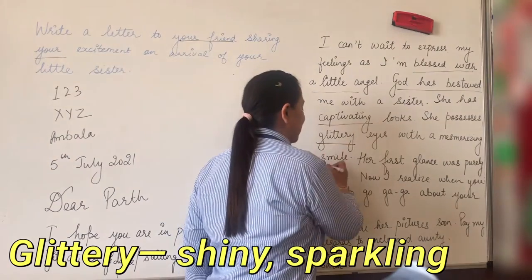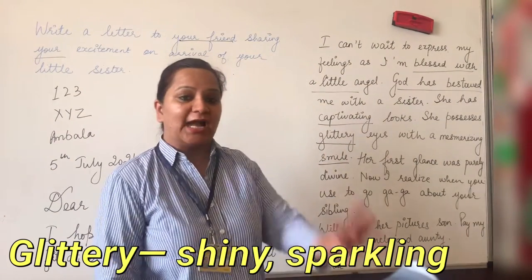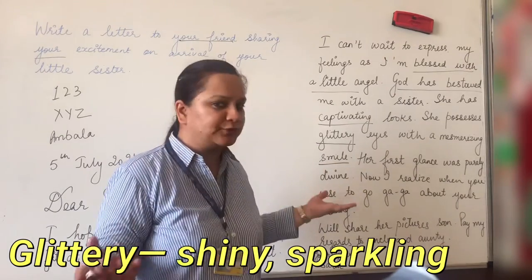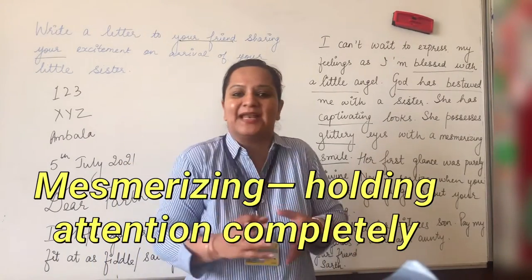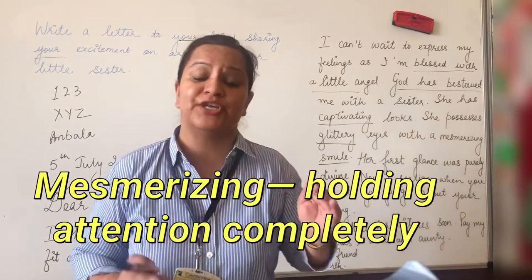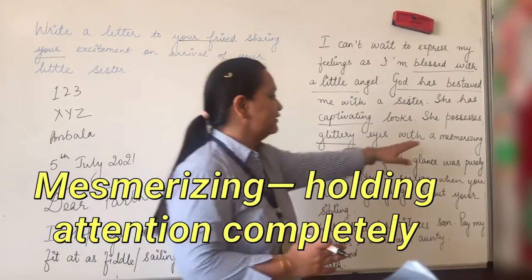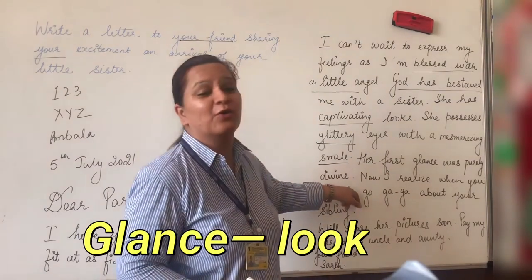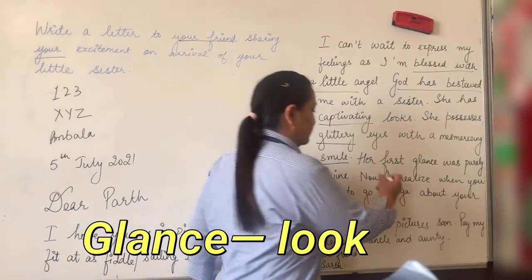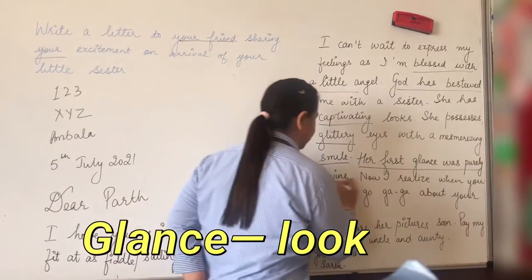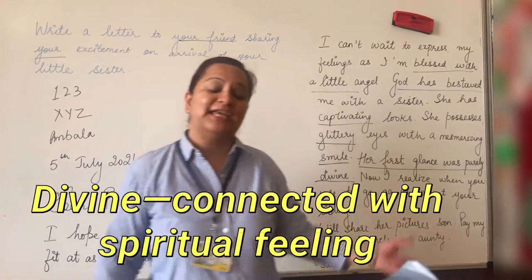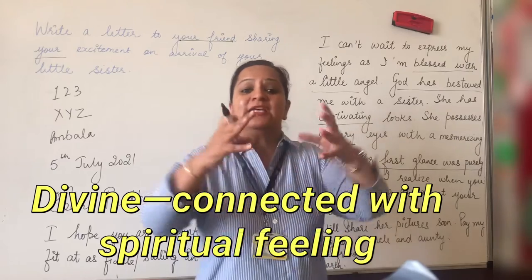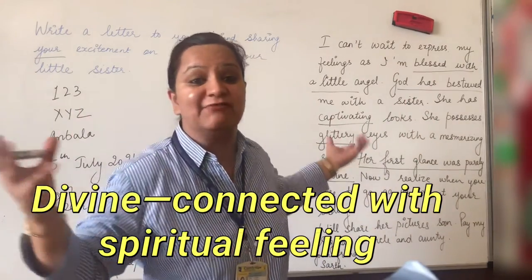Next: 'She possesses glittery eyes with a mesmerizing smile.' I am talking about her eyes and her smile. Her eyes are glittery — glittery means shiny. You can use both 'glittery' or 'shiny,' both are fine. And mesmerizing smile — mesmerizing means when you can't take your eyes off something. Then: 'Her first glance was purely divine.' When I looked at her for the first time, that feeling was divine, that feeling was spiritual — as if I am surrounded by some fairies and divine power.